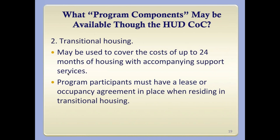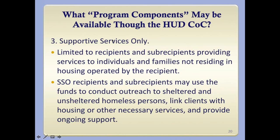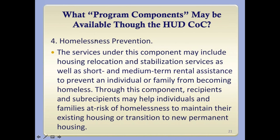The second program component is transitional housing — housing that may cover costs for up to 24 months with support, where participants need to have a lease or occupancy agreement. The third component is supportive services only, which is limited to recipients and sub-recipients providing services to individuals or families not residing in housing operated by the recipient — social services only, including an array of eligible services such as outreach and case management, and in some cases child care.